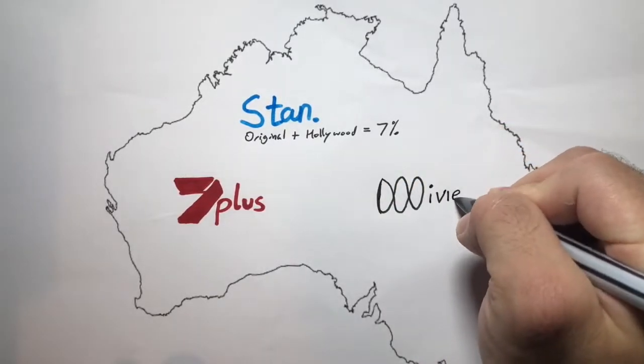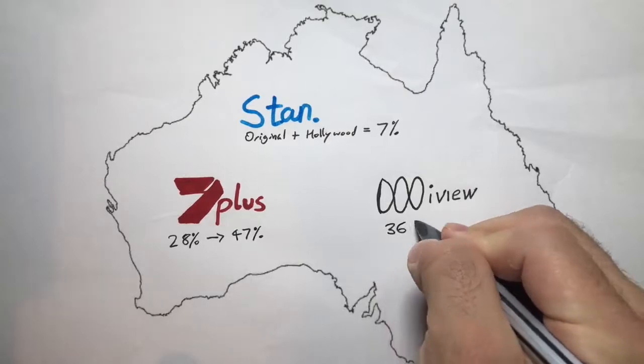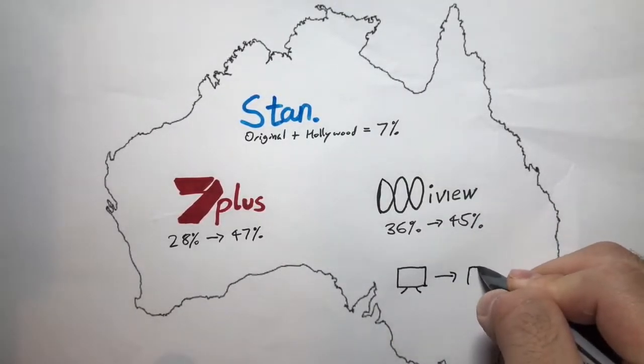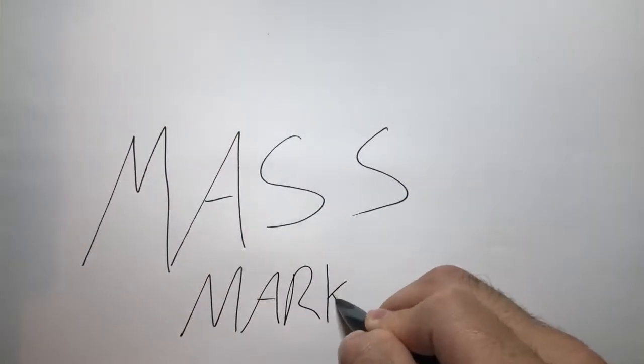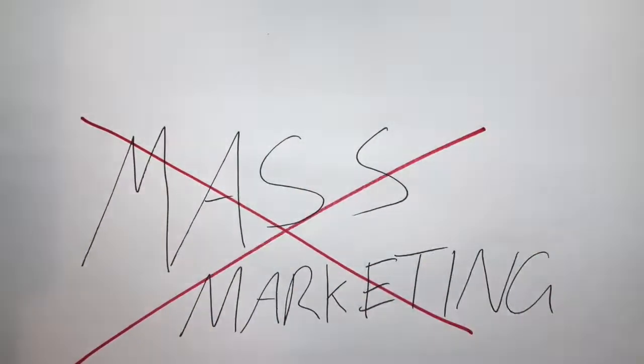Even local players like 7 Plus and ABC iView grew from 28% to 47% and 36% to 45% from 2014 to 2017 respectively in terms of SVOD consumers, depicting the success of cable networks to successfully transition into the digital era.